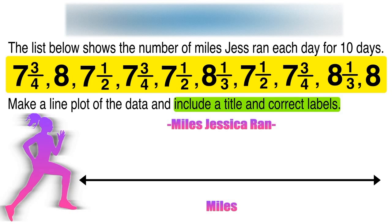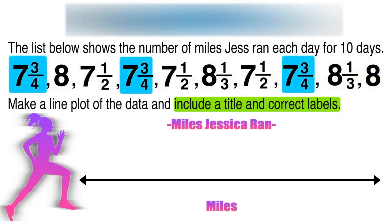We're going to start by color-coordinating so that we can see which values occur more than once. Seven and three-quarters we'll label in blue, eight in pink, seven and a half in orange, and eight and one-third in green. Now we have to identify these values in order from smallest to largest.